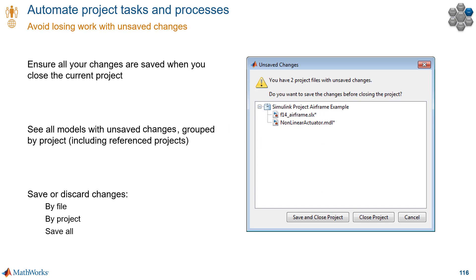Working on the wrong file can be costly, so we definitely want to help you avoid that. Another costly issue is losing work because of unsaved changes. Maybe you have dozens of files open, then you close MATLAB, quickly click through all the prompts, and the next day you realize you didn't save the changes for the one file that mattered. If this hasn't happened to you — good, don't wait for it to happen. Projects help you see all the files with unsaved changes, grouped by project, and that also includes project references. That way you can easily save or discard changes for individual files or for everything in your project.